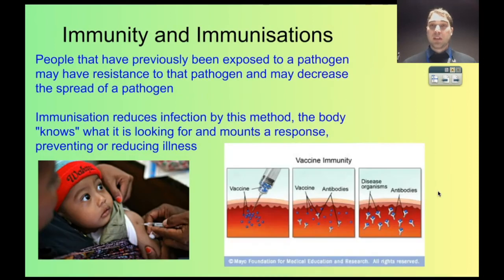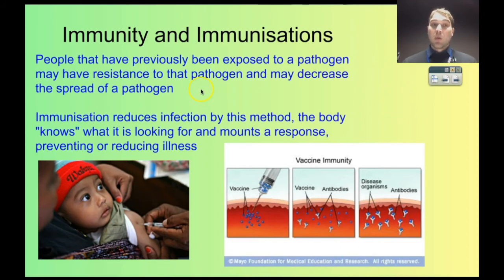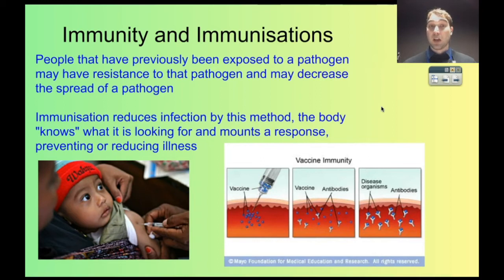The availability of immunizations and natural immunity in the community can reduce the amount of exposure of people to a pathogen. If you've previously been exposed to a pathogen, you develop what's called resistance, produced by antibodies that float around your blood. Because you have these antibodies, your immune system is ready to fight the pathogen as soon as you're exposed to it, which reduces the length and severity of infections and can also reduce the ability of the infection to spread.